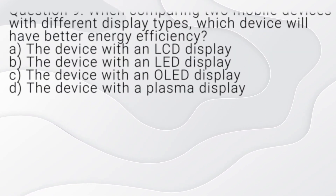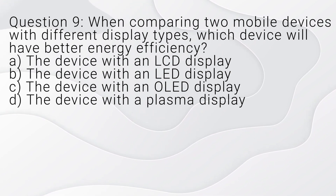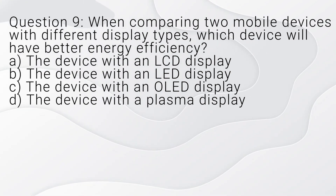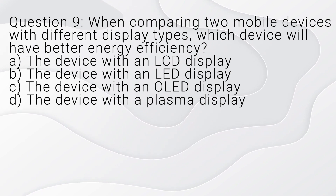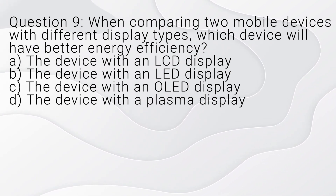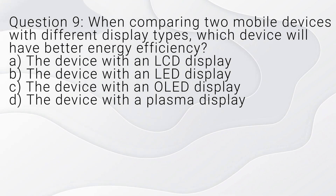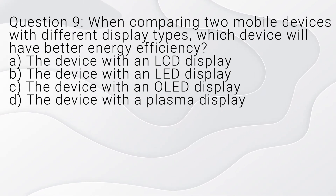Question 9. When comparing two mobile devices with different display types, which device will have better energy efficiency? A. The device with an LCD display. B. The device with an LED display. C. The device with an OLED display. D. The device with a plasma display.